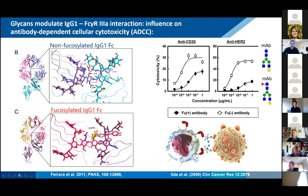Here's a picture of how this looks: you have the cancer cell with the HER2 antigen on its surface, the antibody binding to it, and then the FcγR3A receptor on the immune cell — which could be an NK cell. By this interaction, the immune cell gets activated and starts killing the cancer cell.